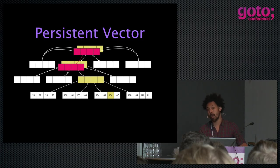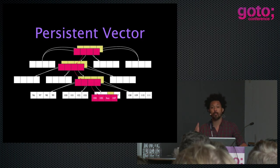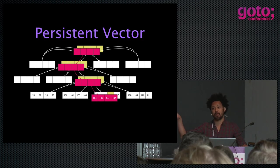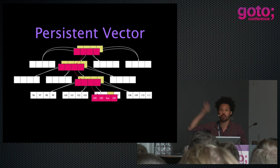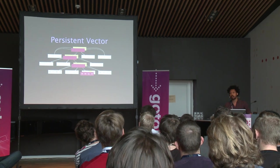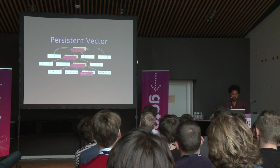Now that we know how to find something, how do we update something? This is where we see how we can do much better than copy-on-write. All we have to do is replace the path that needs to change. If you want to update the 106th element and instead of 106 we want to put the string 'foo,' we have to replace the root and the arrays on the path at each level — we know exactly which ones to replace the same way we knew how to find something, because the index gives us the path. We get a new vector that shares about 95% of its contents with the previous value.